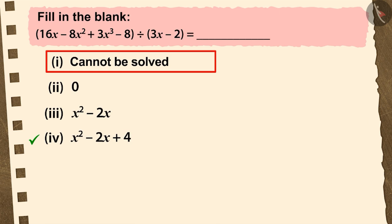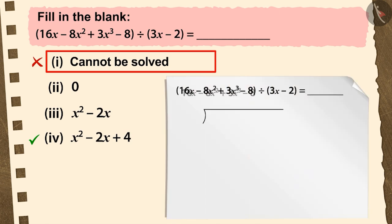If you have chosen the first option, it is a good try. But this is the wrong answer because before starting the division process, you did not write the dividend in the standard form, because of which it is almost impossible to solve this division question.